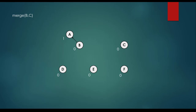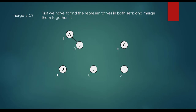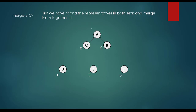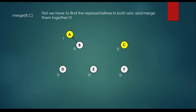Let's merge B and C. We look for the representatives: A is the representative for the {A, B} set, and C is a single item representing itself. We merge them by attaching C as a child of A. We don't increment the rank because the rank parameters are not equal — C's rank is 0 and A's rank is 1.